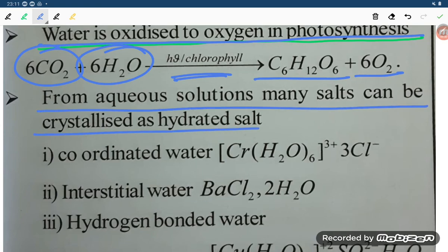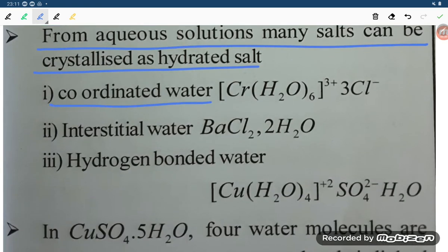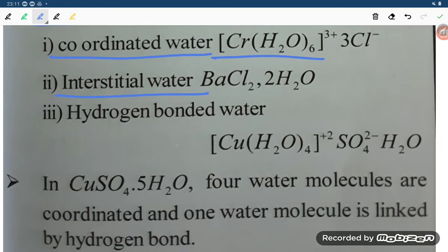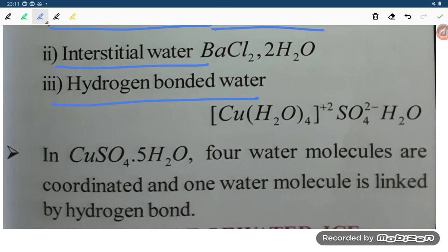Coordinated water like CrCl3·6H2O. Interstitial water like BaCl2·2H2O. Hydrogen bonded Cu(H2O)4 2+ SO4 2- H2O. In CuSO4·5H2O, four water molecules are coordinated and one water molecule is linked by hydrogen bonding.